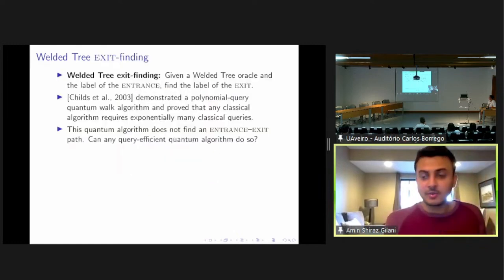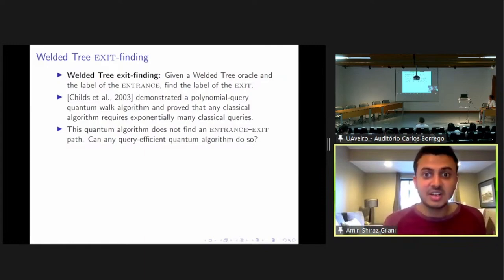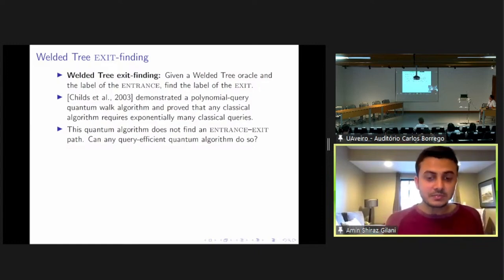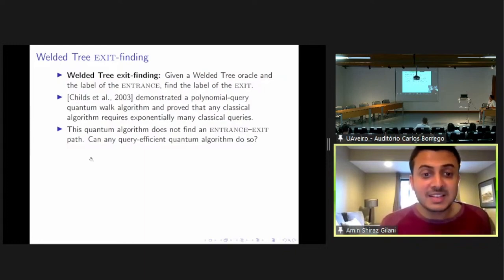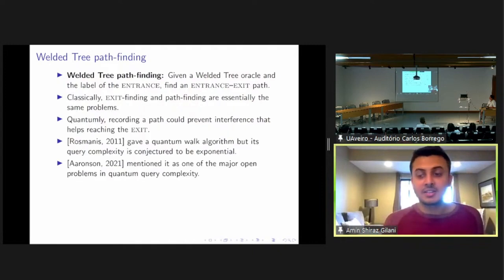Now we are ready to describe the welded tree exit finding problem. In this problem, we are given as inputs a welded tree oracle and the label of the entrance, and the goal is to find the label of the exit. Childs et al. considered this problem in 2003 and showed a polynomial query quantum algorithm based on a quantum walk. They showed that no classical algorithm can solve this problem with less than exponentially many classical queries. But this quantum algorithm does not find an entrance-to-exit path, so a natural question arises: is it possible to find any query-efficient quantum algorithm that would do that? This gives rise to the welded tree path finding problem, which has the same inputs, but the goal is to find an entrance-to-exit path.